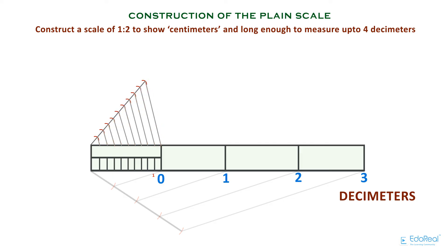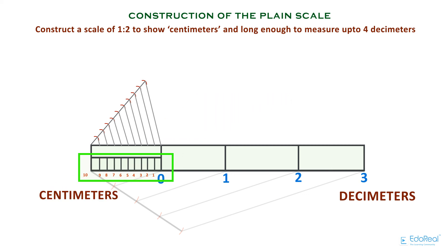Number them 1, 2, 3, up to 10, from the 0. These are the sub-units of the scale — that is, centimeters. So write 'centimeters' at the left side of the scale. We need to write the representation factor, 1/2, below the scale in the middle. This is how we need to construct the plane scale.